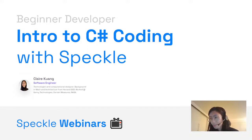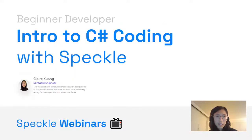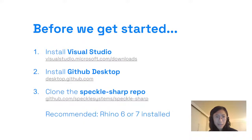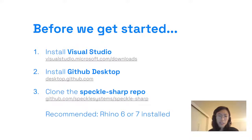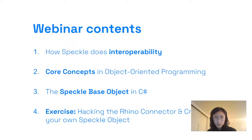Before we get started, there are a few prerequisites. It'd be great if you could install Visual Studio, install GitHub Desktop, and clone our SpeckleSharp repo. I'll show you how to do that in the live coding section of this webinar. Also for testing, it would be great if you had Rhino 6 or 7 installed — it's not necessary but recommended.